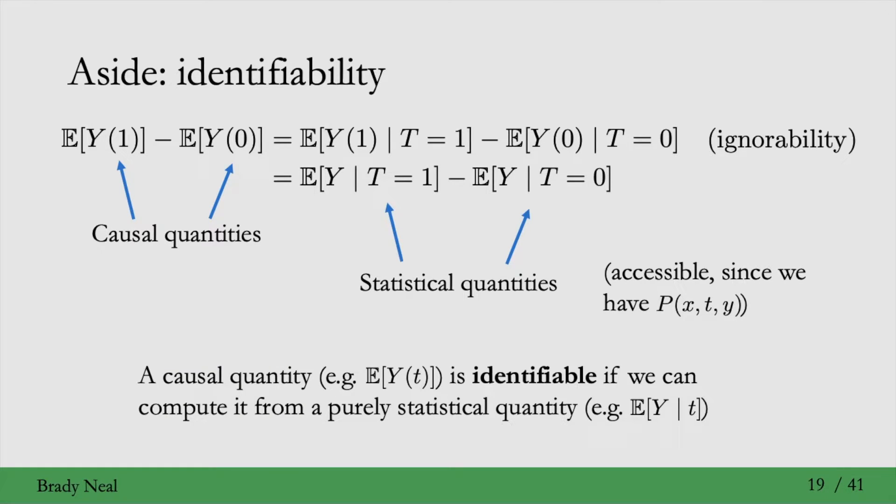We say that a causal quantity, such as expected value of y, t, is identifiable if we can compute it from a purely statistical quantity, such as expected value of y conditioned on t.